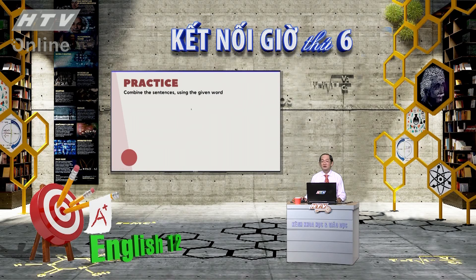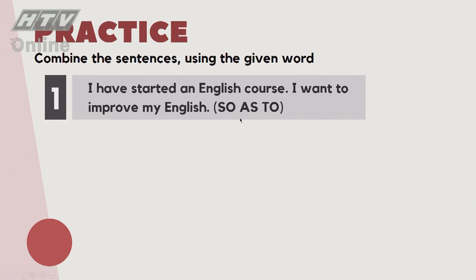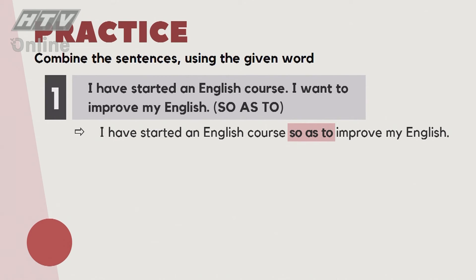Bây giờ thử làm bài tập về 'in order to' và 'so as to' - nối các câu lại dùng từ cho trong ngoặc đơn. Câu 1: 'I have started an English course. I want to improve my English.' Dùng 'so as to': 'I have started an English course so as to improve my English.'